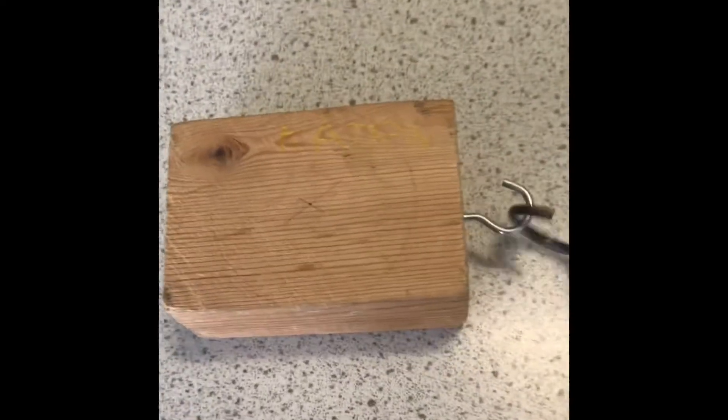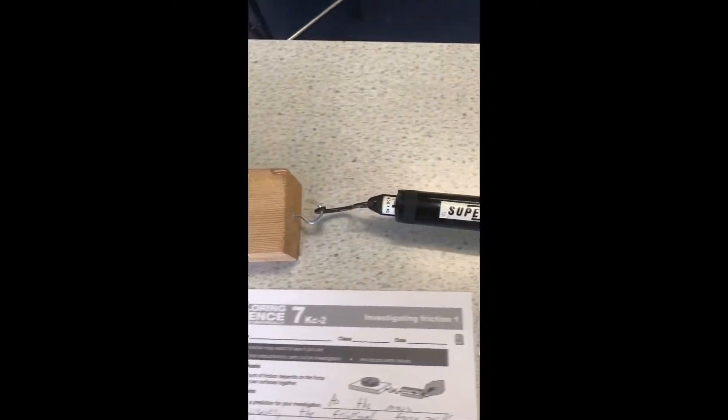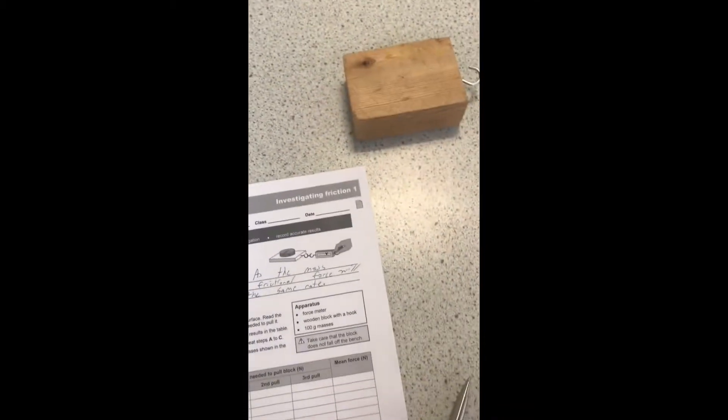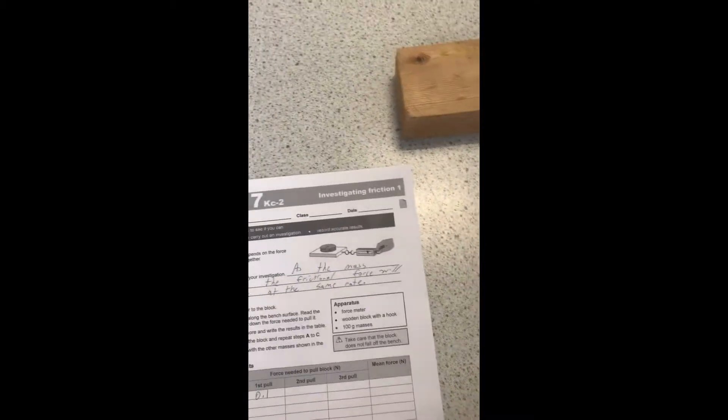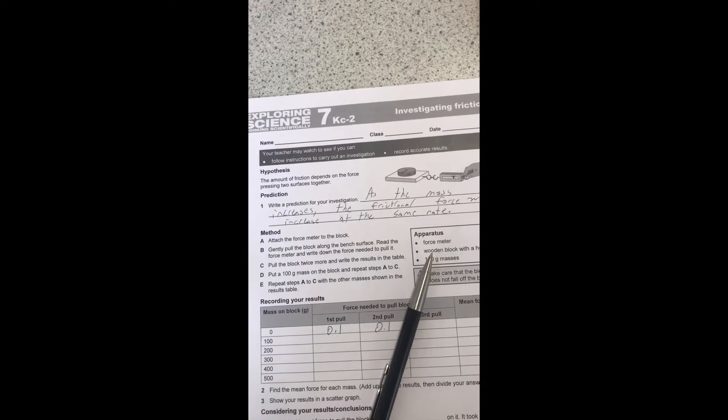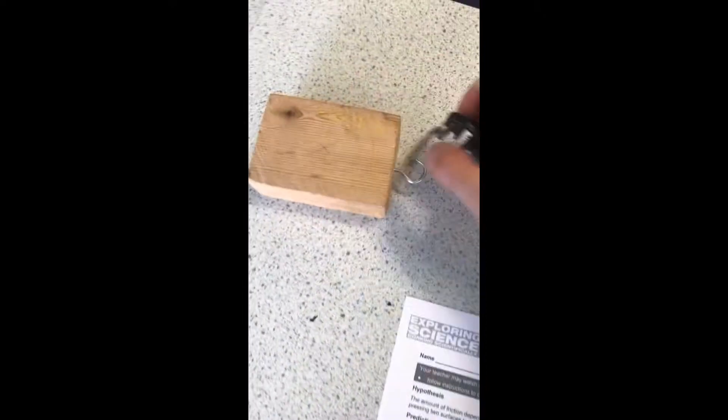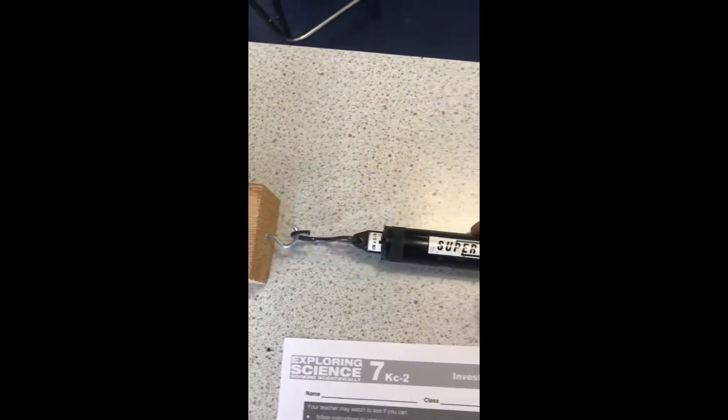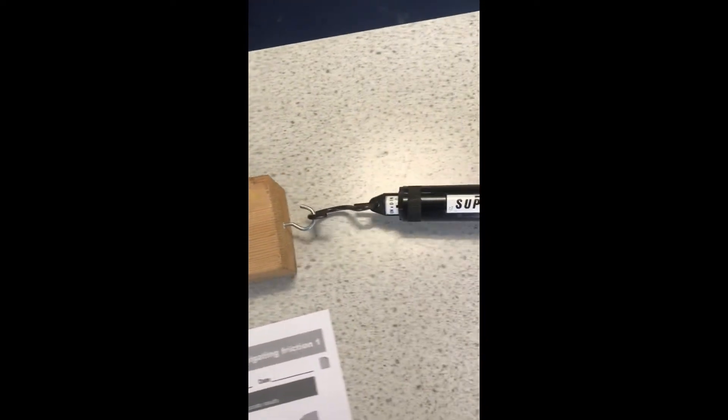We'll begin by measuring the force of just the wooden block. As I pull it across the table we can see the force is approximately 0.1 Newtons. We will pull the block with no weight on it again - the force is approximately 0.1 Newtons. And lastly we will complete this one more time. Once again it is 0.1 Newtons.